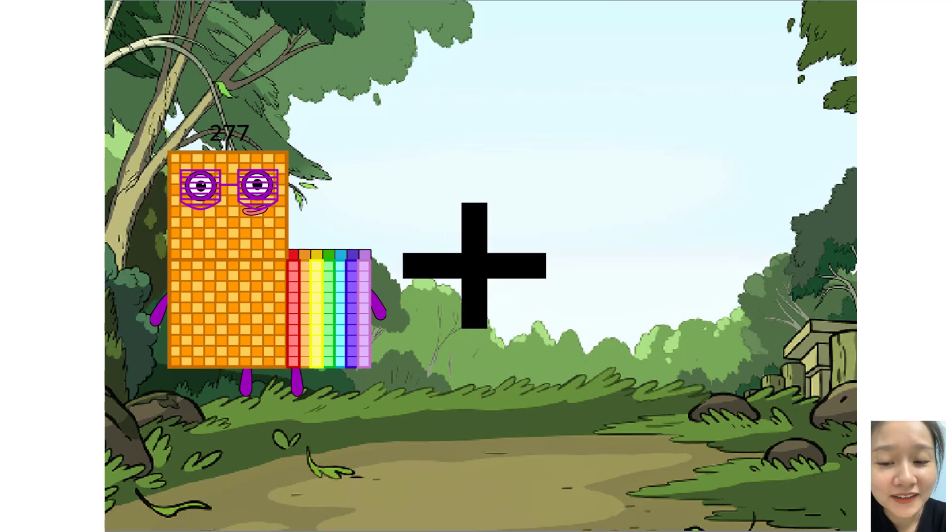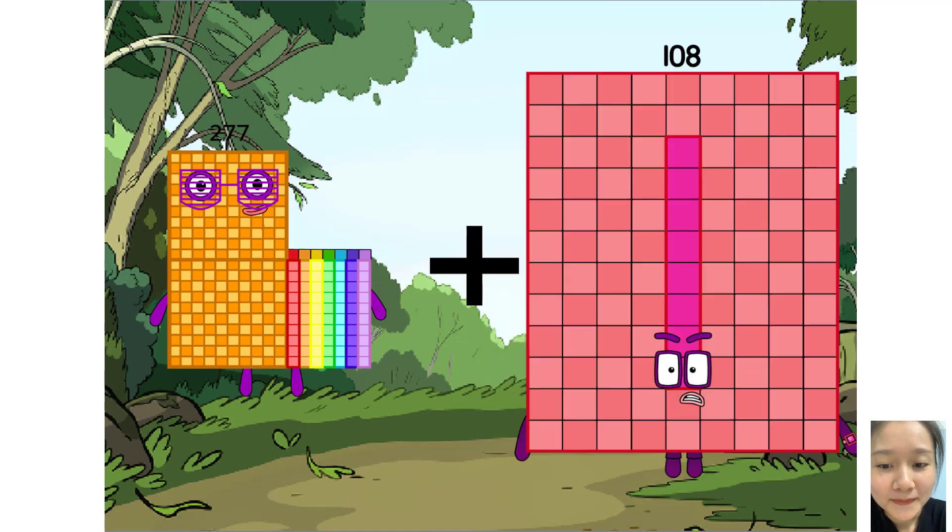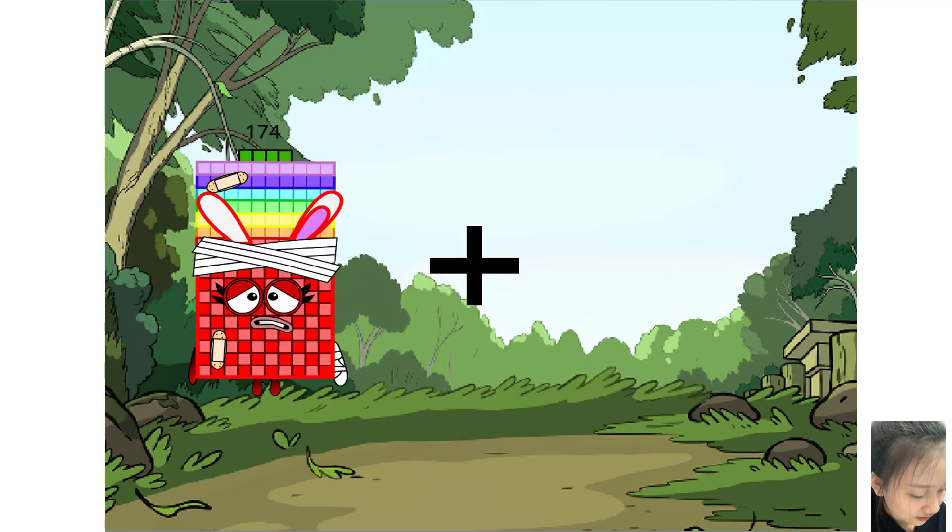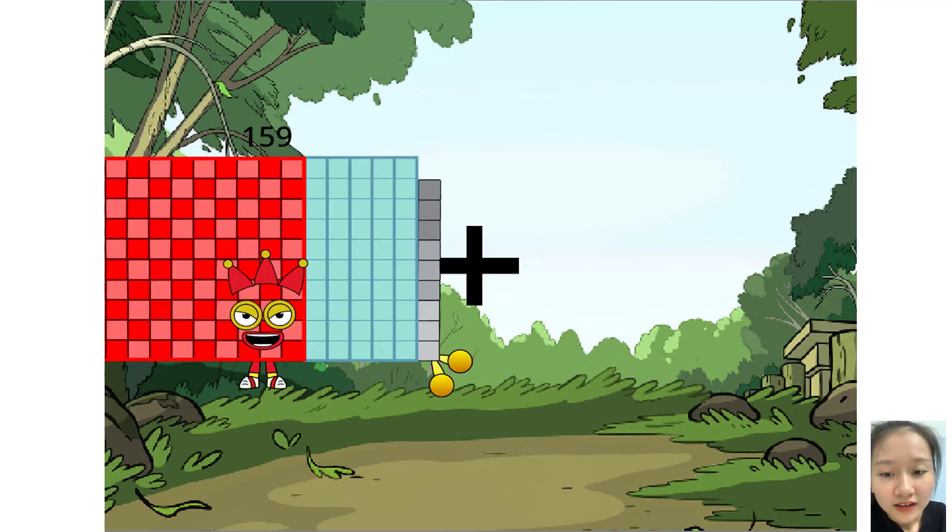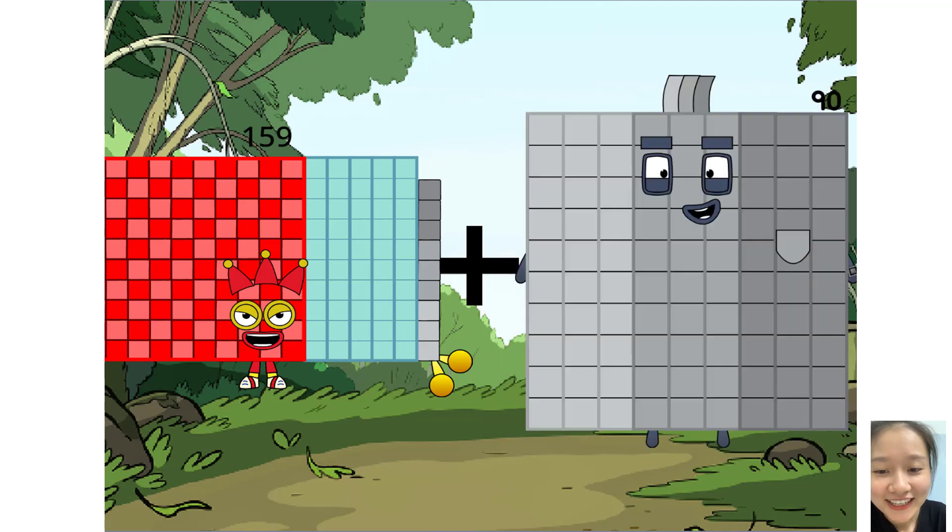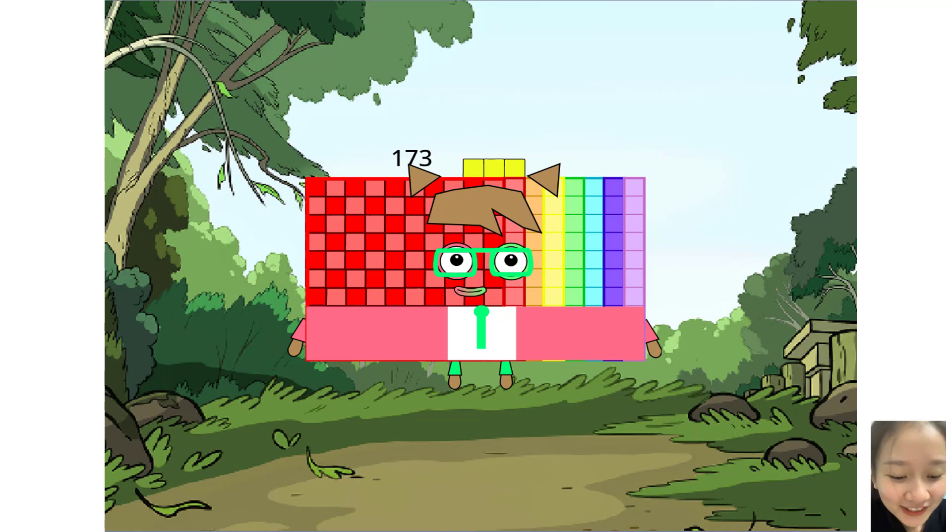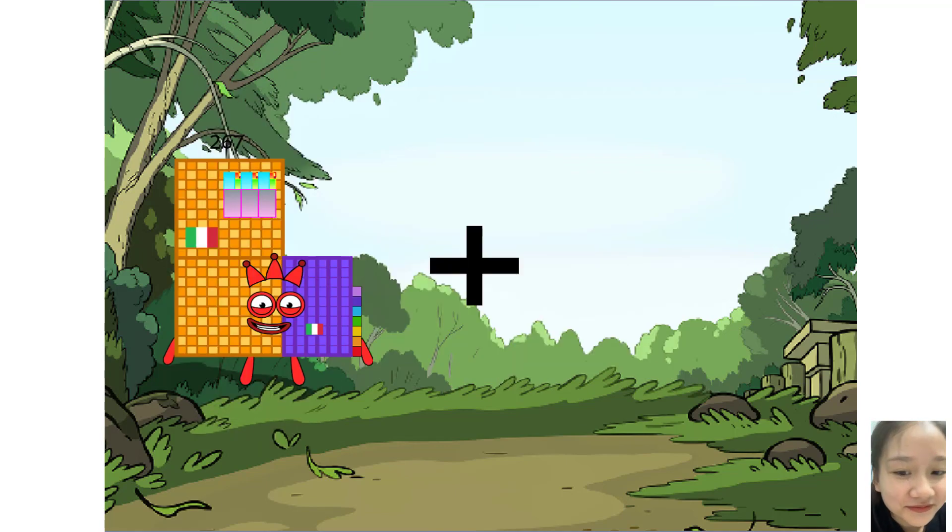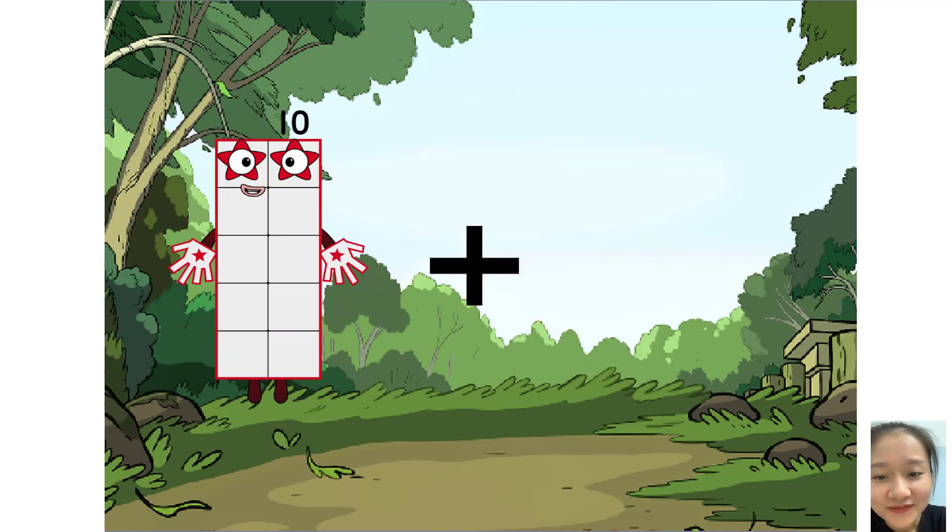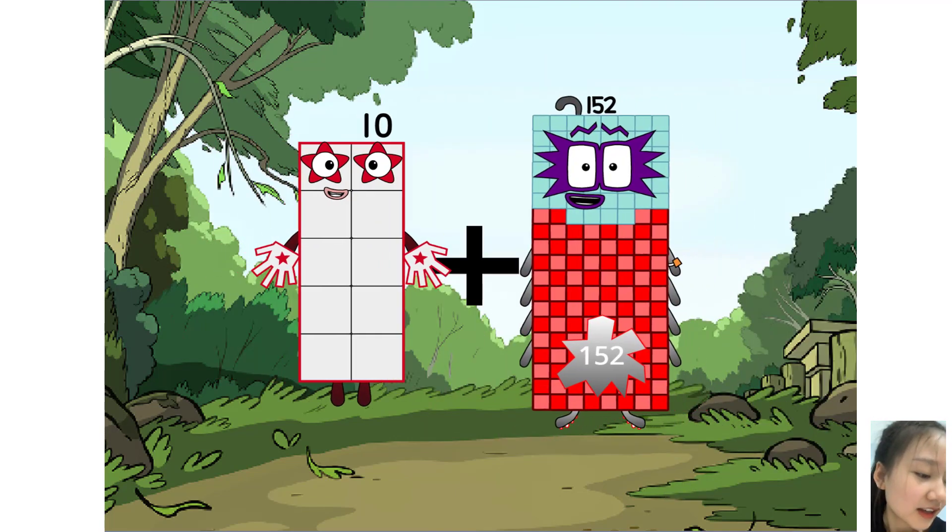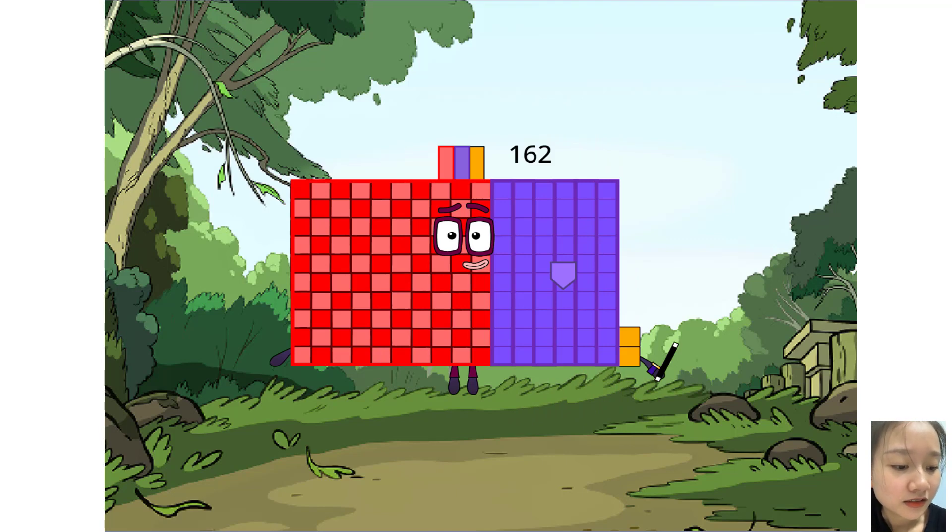277 plus 55 equals 17. 159 plus 10 plus 152 equals 162.